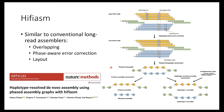I'll briefly give an overview of the hifiasm algorithm. First it does error correction — although HiFi reads are very accurate, we want even more accurate reads, so we correct them to near error-free. Then with the near error-free reads, we construct the overlap graph, and then we use allelic information to separate the two haplotypes — what we call a bubble. We can separate them out into two assemblies. This paper was published in Nature Methods earlier this year.